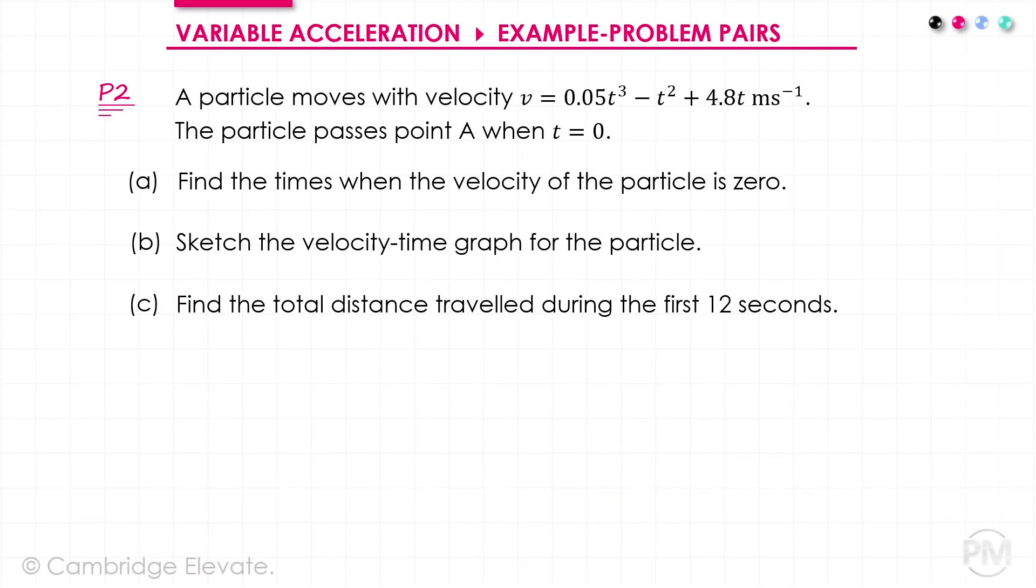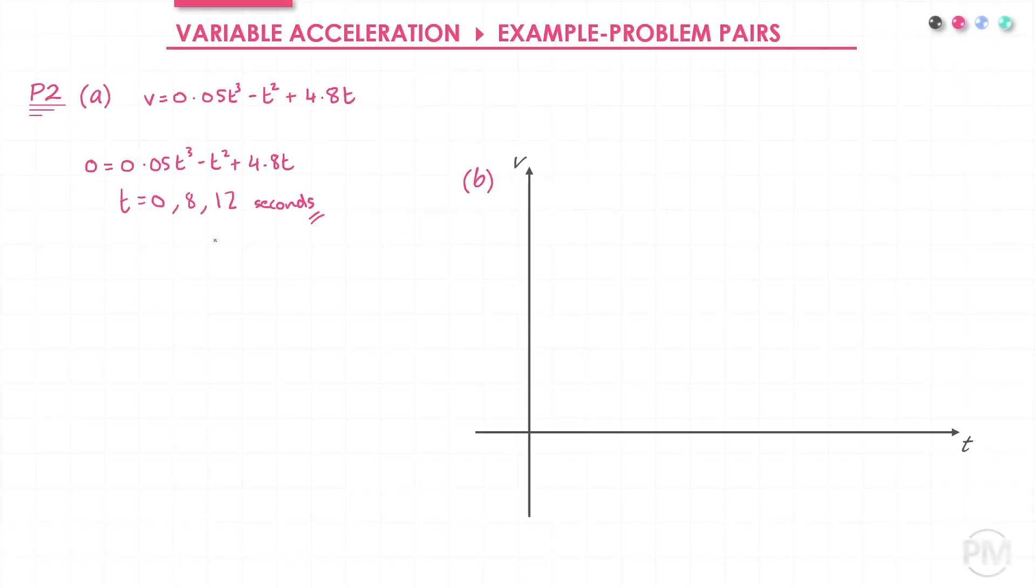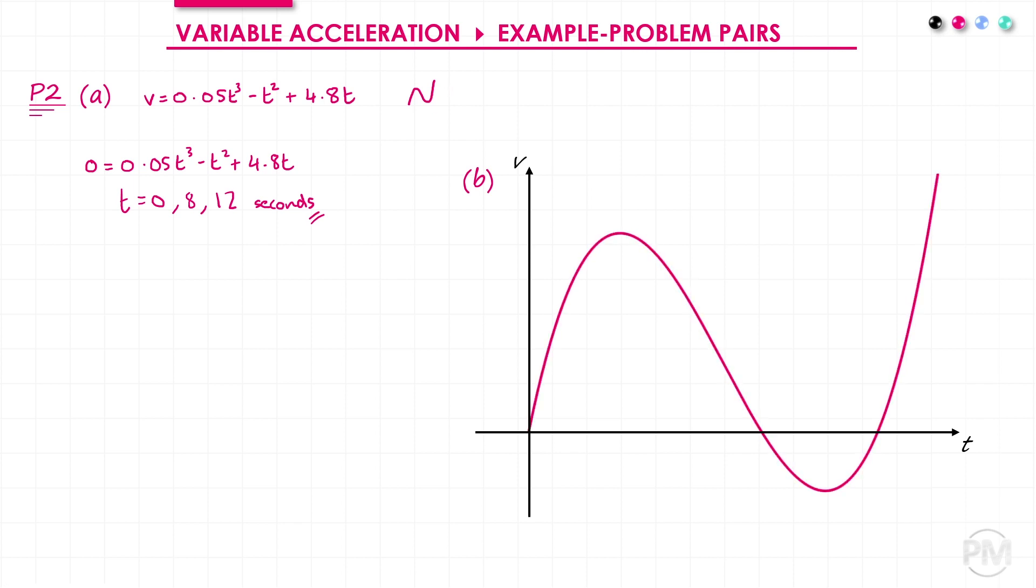In part B, I need to sketch the velocity time graph for the particle. I know my roots are 0, 8, and 12. And I know I've got a positive cubic because I've got a positive t cubed term. So I'm going to have this shape. So starting from 0, I'm going to go up, down, up. Remember not to draw anything below 0. And I'm going to label 8 and 12 on the horizontal axis. And there's my sketch.